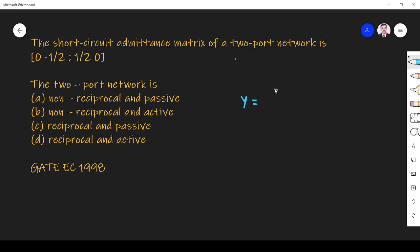Admittance is nothing but the Y parameter matrix, so that is given by [0, -1/2; +1/2, 0]. They are asking whether the network is non-reciprocal and passive, non-reciprocal and active, reciprocal and passive, or reciprocal and active. For a Y parameter to be reciprocal, Y12 must be equal to Y21.